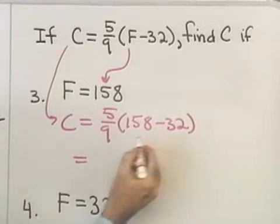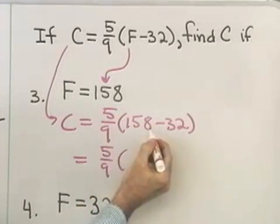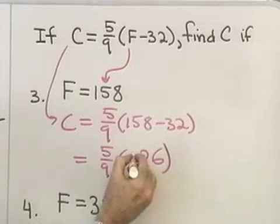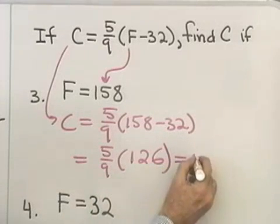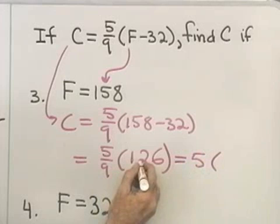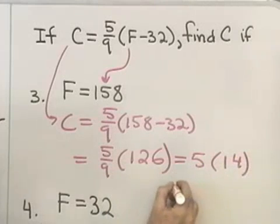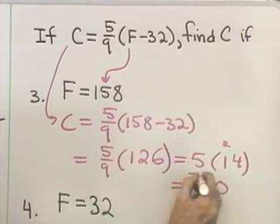So let's see, 158 minus 32. This would be 5 9ths times, 2 from 8 is 6, 3 from 5 is 2. So I have 126. Let's see, does 9 divide in there evenly? I hope so. This is going to be 5 times, 9 divides into 12 once, and then I have 3 left over 4. So 5 times 14 is 70.